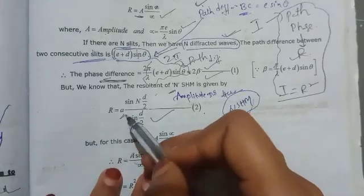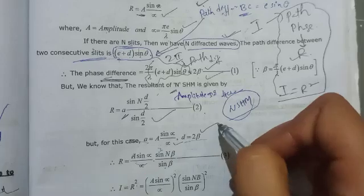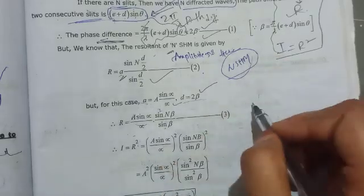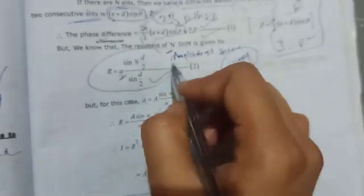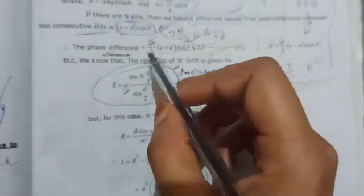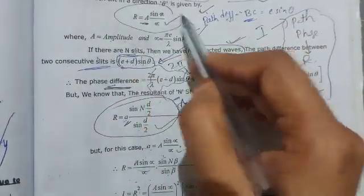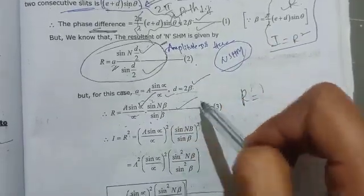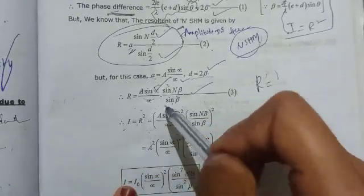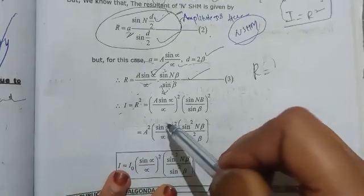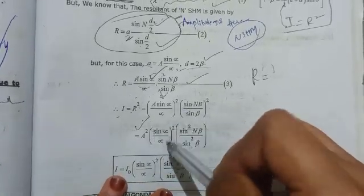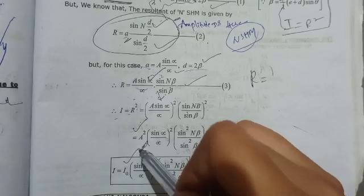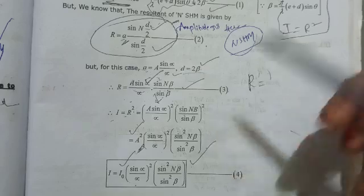The resultant amplitude from N slits is given by: R equals A times sin(alpha)/alpha times sin(N*beta)/sin(beta). Substituting the value of A and replacing D with 2 beta, the intensity I equals R squared, which gives: I equals I-naught times sin squared(alpha) over alpha squared times sin squared(N*beta) over sin squared(beta). This is the final intensity equation for the diffraction grating.